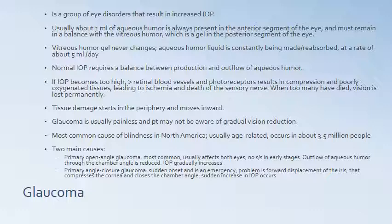Tissue damage starts in the periphery and moves inward, so a patient may not notice right away that peripheral vision is becoming less acute. Glaucoma is usually painless, so the patient may not be aware of gradual vision reduction. There are two main types: primary open angle glaucoma — the most common, usually affecting both eyes with no early signs or symptoms, where outflow of aqueous humor through the chamber angle is reduced and intraocular pressure gradually increases.